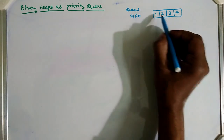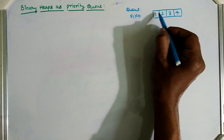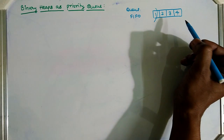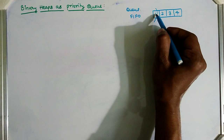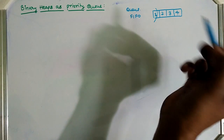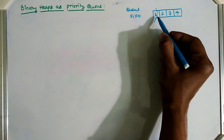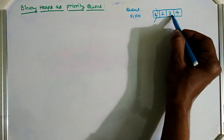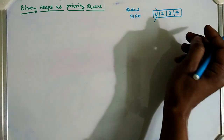For example, if elements one, two, three, four are inserted in that order, then one will be taken out first, then two, then three, then four — because one is inserted first. Every element follows this order.